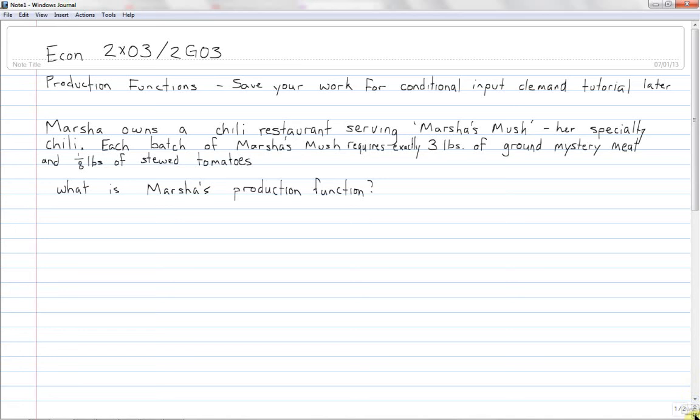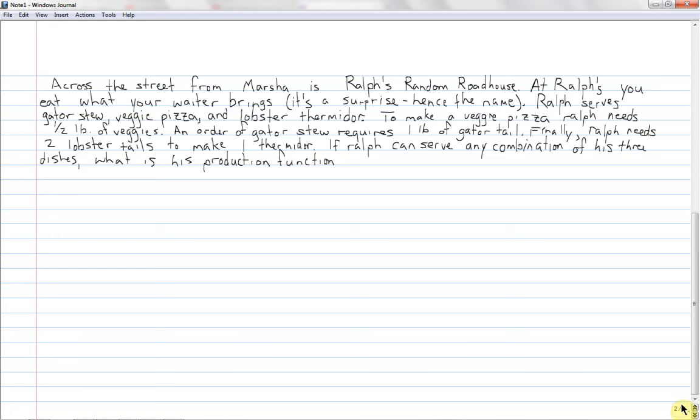Across the street from Marsha is Ralph's Random Roadhouse. At Ralph's you eat what your waiter brings. It's a surprise, hence the name. Ralph serves gator stew, veggie pizza, and lobster thermidor. To make a veggie pizza, Ralph needs one half pound of veggies. An order of gator stew requires one pound of gator tail. Finally, Ralph needs two lobster tails to make one thermidor. If Ralph can serve any combination of his three dishes, what is his production function?